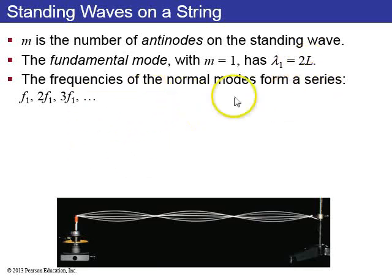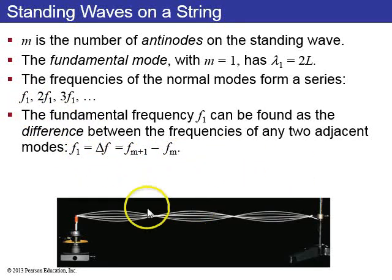The frequencies of the normal modes form a series. They're all integer multiples of f1, where f1 is the fundamental frequency. So whenever you have a series of frequencies that you know are standing waves, the difference between any two adjacent modes is this fundamental frequency.